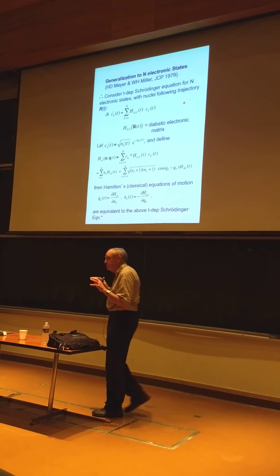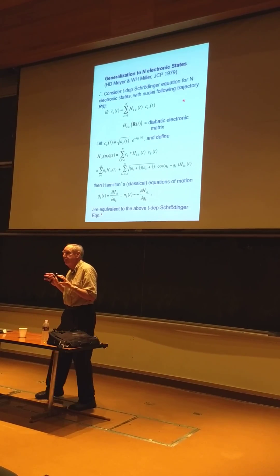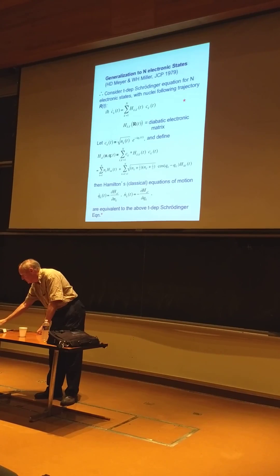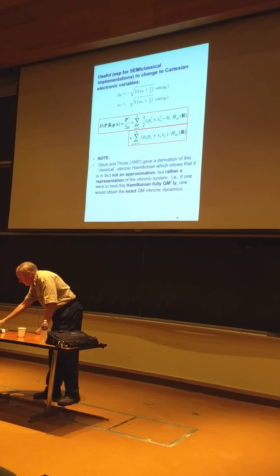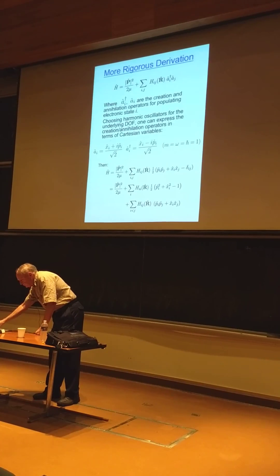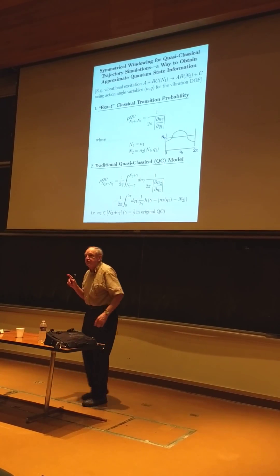So, each final state has its own ensemble of trajectories, the one that end up on that surface. And so, it's all in the boundary conditions. And that's why it's not Ehrenfest and it makes a world of difference.